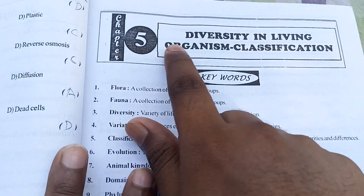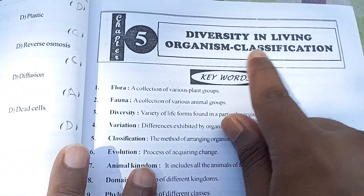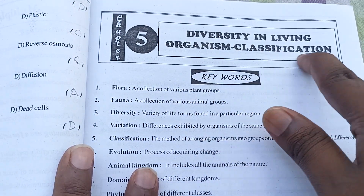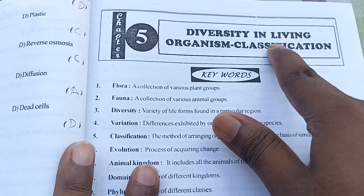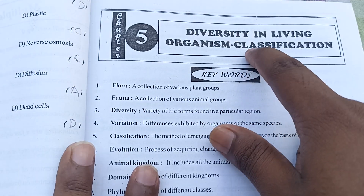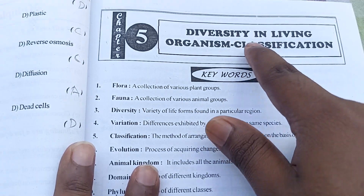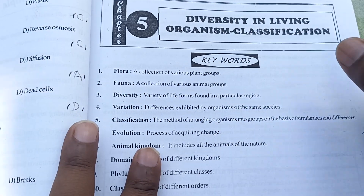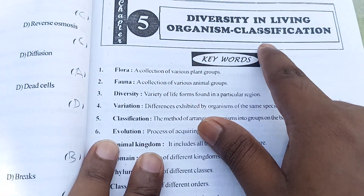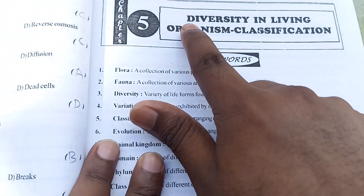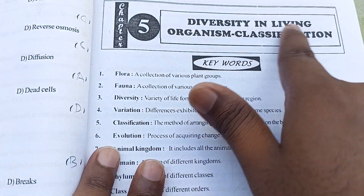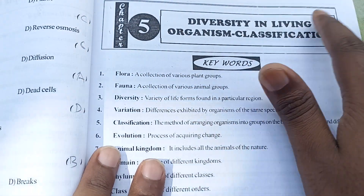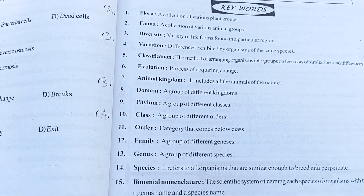You can see this is Chapter 5, Diversity in Living Organisms. Don't confuse with 'calcification' — in older textbooks there is a question with that term, but in the 2023-24 book it is not given. The chapter is titled 'Diversity in Living Organisms' only. Everything else is the same.